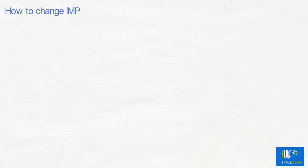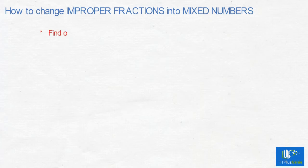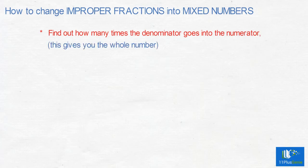How to change improper fractions into mixed numbers? Find out how many times the denominator goes into the numerator. This gives you the whole number. Write the remainder as the numerator of the fraction.